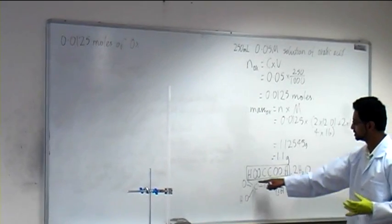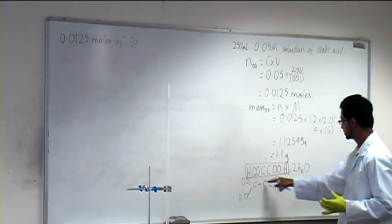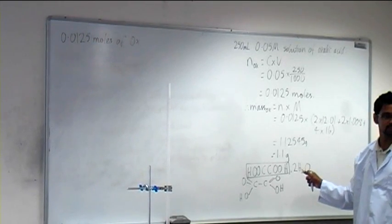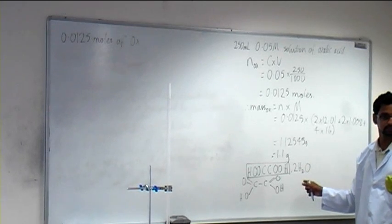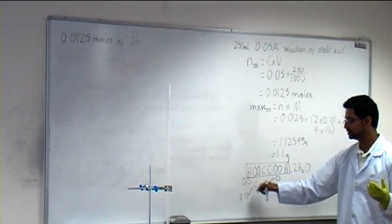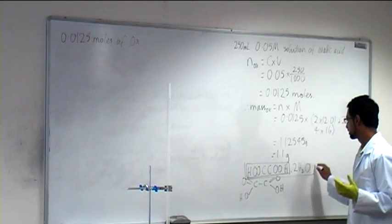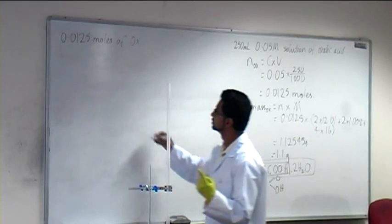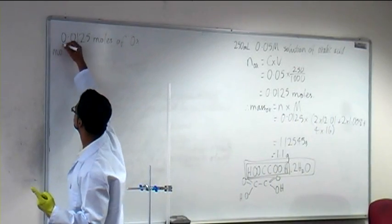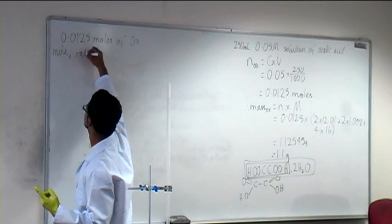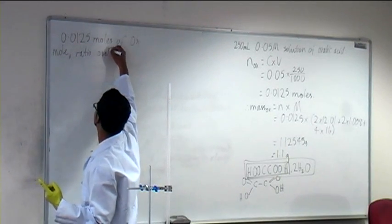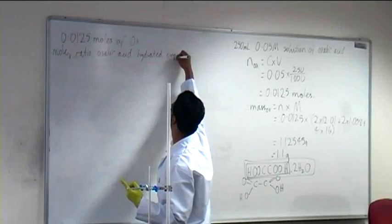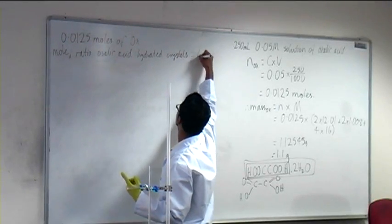We can look at the mole ratio of oxalic acid within the hydrated oxalic acid crystal. The mole ratio of oxalic acid to the entire hydrated crystal is 1 to 1 — 1 mole of oxalic acid for every 1 mole of hydrated oxalic acid.